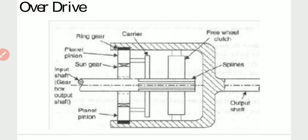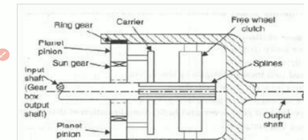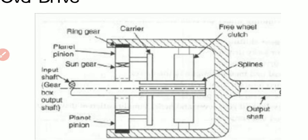The overdrive uses an epicyclic gear train. On the left side, the input shaft carries the sun gear and planet gear (pinion). The outer casing has a ring gear. Through splines, a free wheel clutch is fitted, and the output shaft is fitted through a cover. The output shaft is connected to the ring gear and pinion gear through the outer cover. This is the epicyclic gear train of the overdrive.